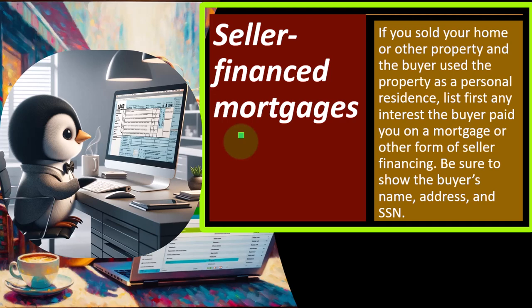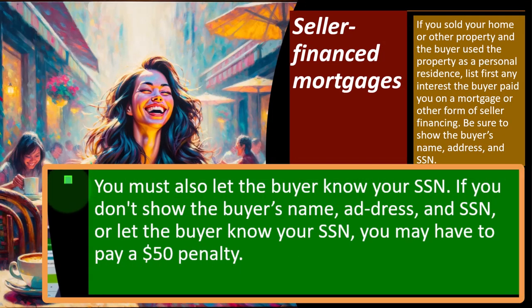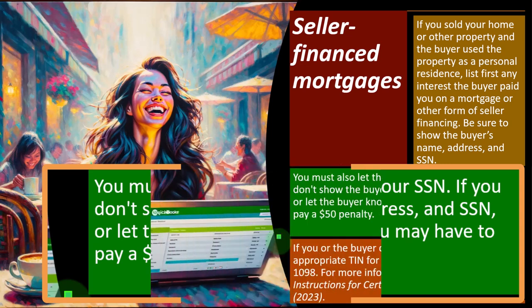You could imagine a structured sale where you have a seller-financed mortgage situation. If you sold your home or other property and the buyer used the property as a personal residence, list first any interest the buyer paid you on a mortgage or other form of seller financing. Be sure to show the buyer's name, address, and Social Security Number. You must also let the buyer know your Social Security Number. If you don't provide the buyer's SSN or let them know yours, you may have to pay a $50 penalty. If you or the buyer don't have an SSN, use the appropriate TIN. Form 1098 is typically the reporting form for mortgage interest.